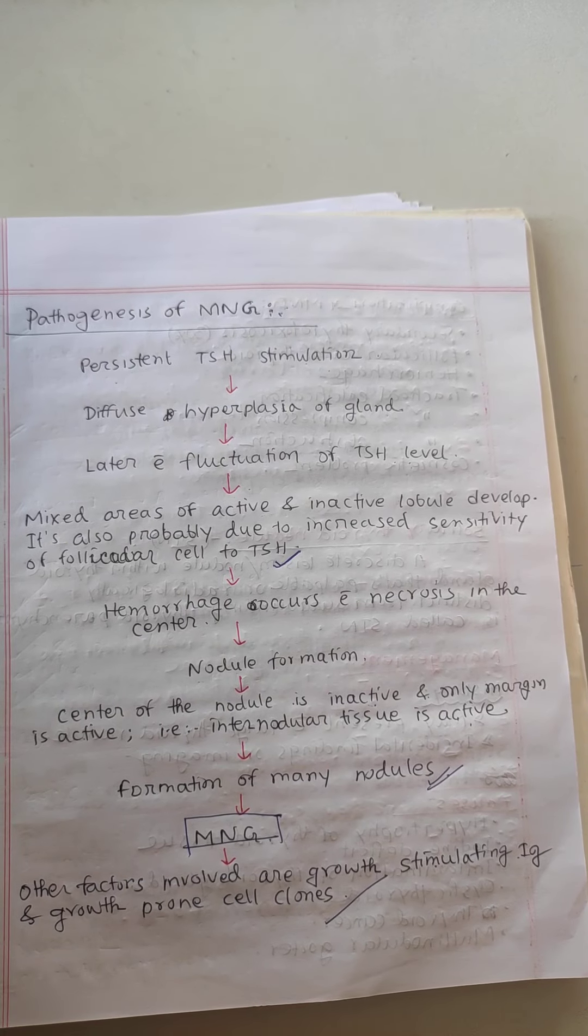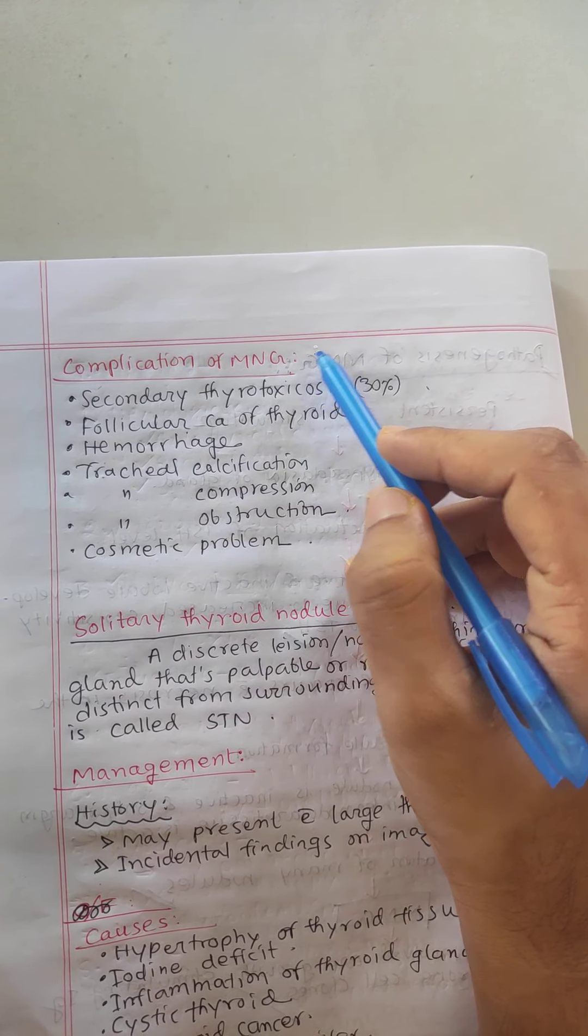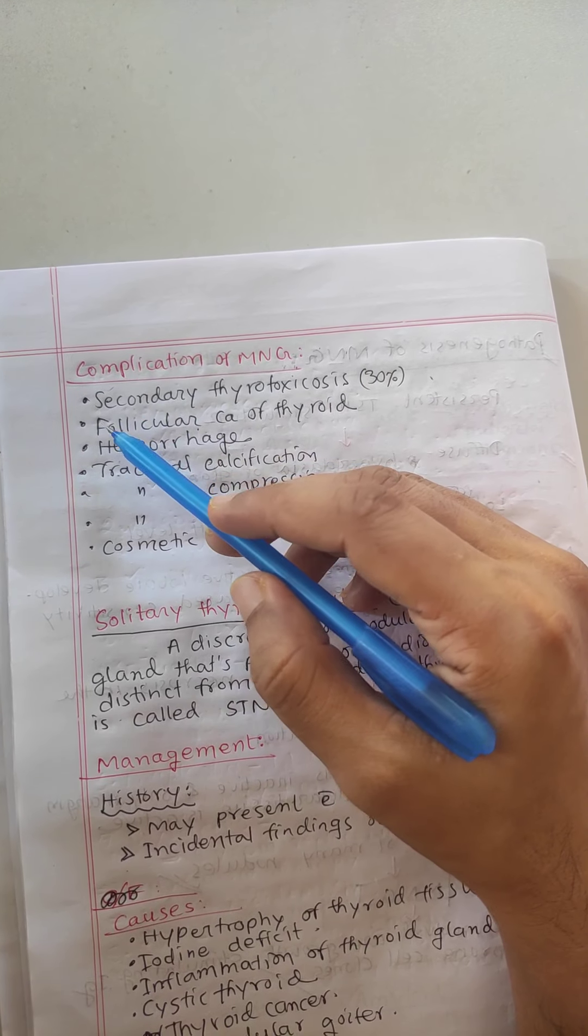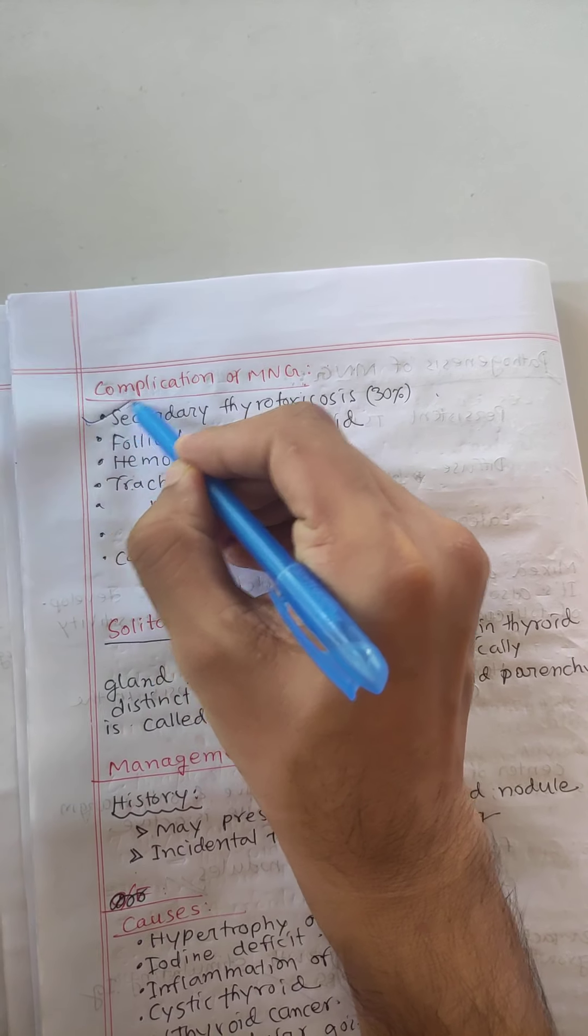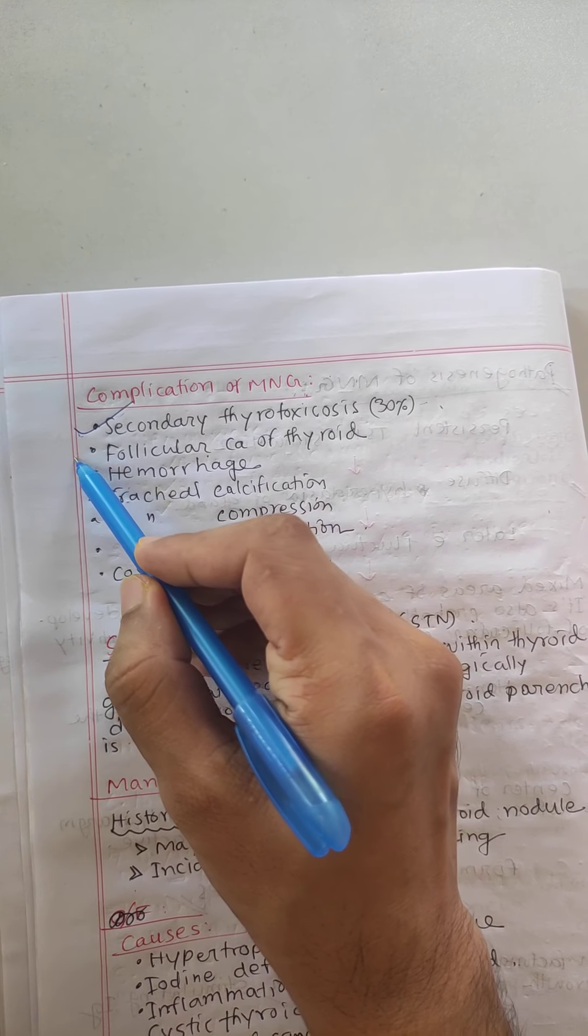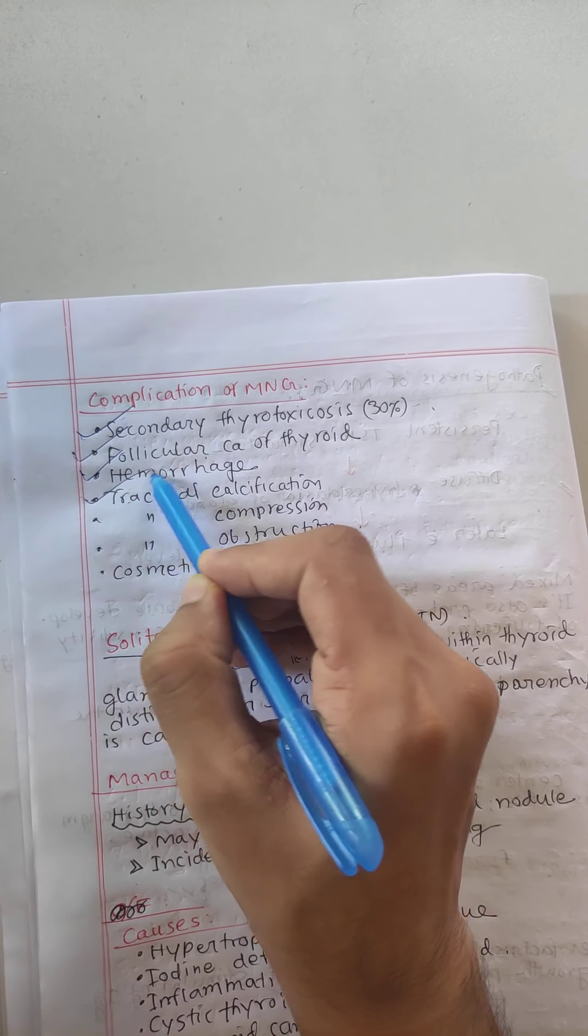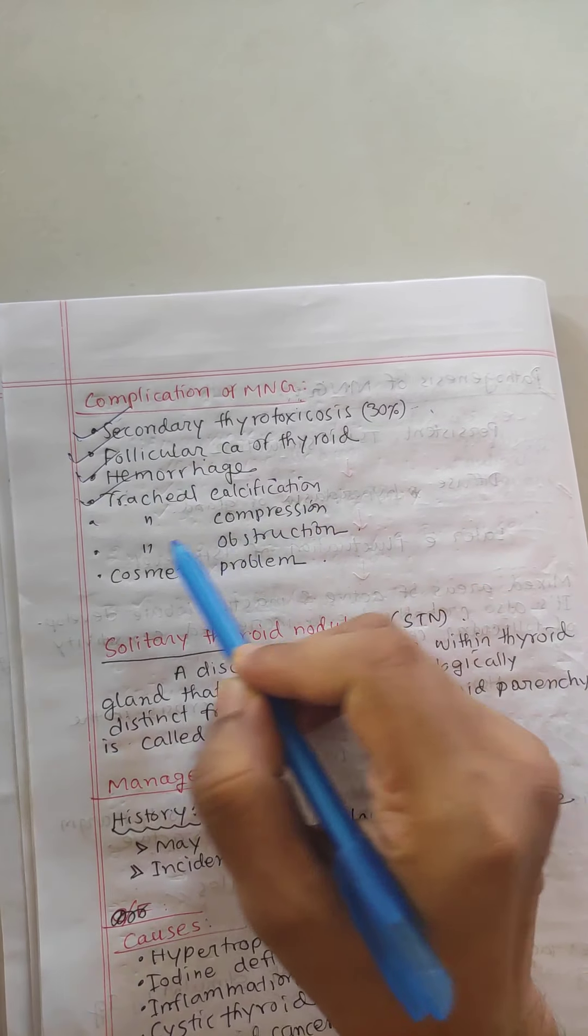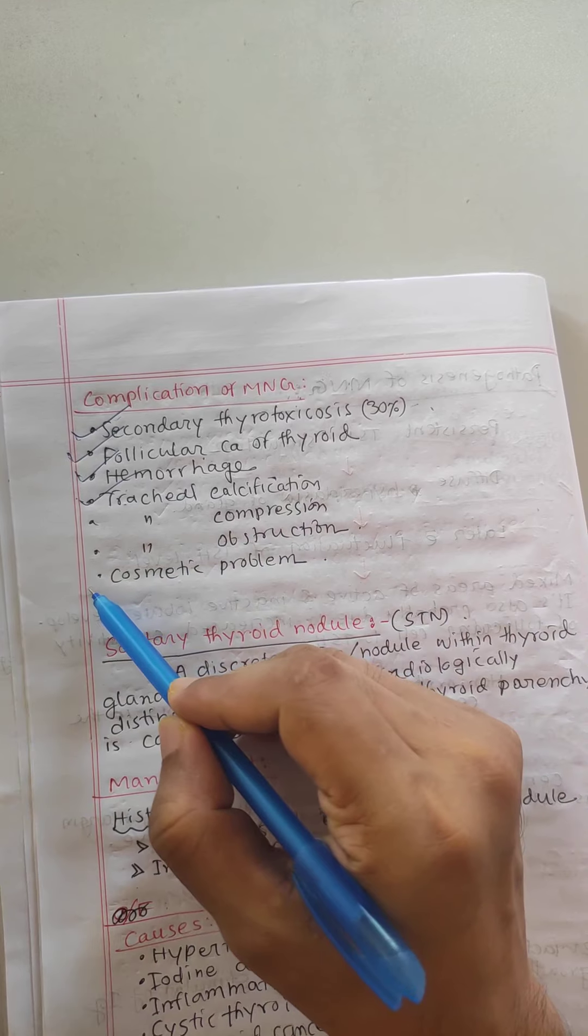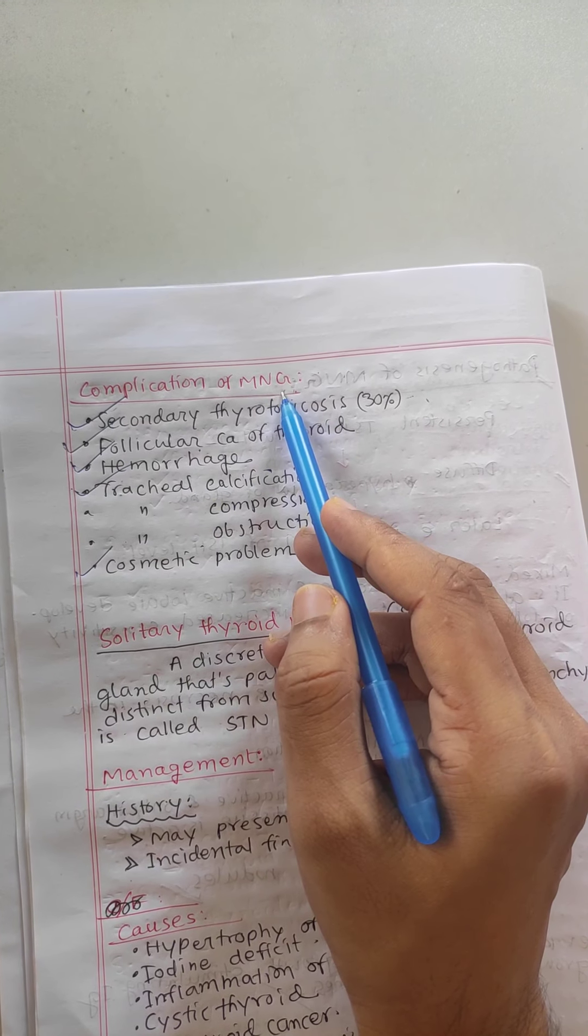Complications of multinodular goiter - number one is secondary thyrotoxicosis in 30% of cases, then follicular carcinoma of the thyroid, hemorrhage, tracheal compression and obstruction, and cosmetic problems.